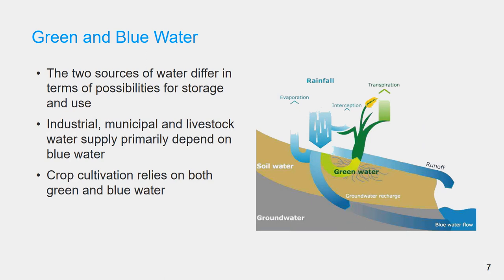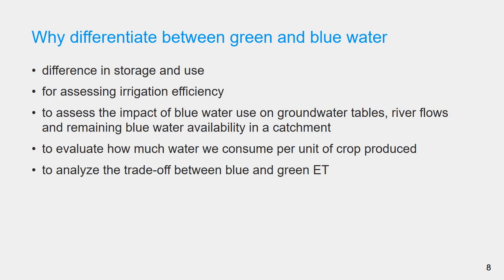Green and blue water differ in terms of possibilities for storage and use. Industrial, municipal, and livestock water supply primarily depend on blue water, while crop cultivation relies on both green and blue water. Rainwater is stored in the soil and is primarily used in situ for biomass production. Groundwater and surface water are stored in natural aquifers, lakes, and rivers, but can also be abstracted, diverted, transported, and stored in artificial reservoirs for irrigating crops or trees, or for household, municipal, and industrial water supply.